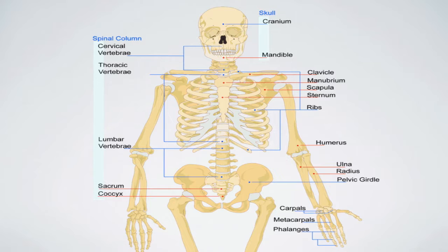His head is a little on backwards. There we go. Without looking at the screen, I want you guys to identify the parts. This is the skull. These are the ribs. This is the femur. This is the patella.